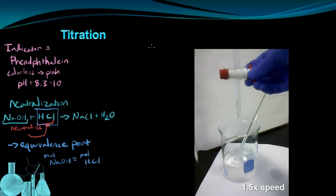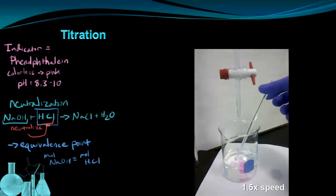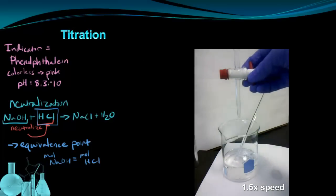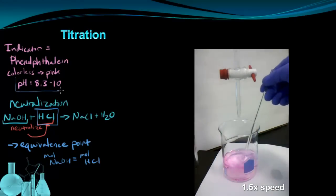So for the titration itself, as I'm going through and I'm constantly adding base, I'm looking for a slight permanent color change because that's going to tell me that I've hit this pH range, 8.3 to 10. And the phenolphthalein changed color.